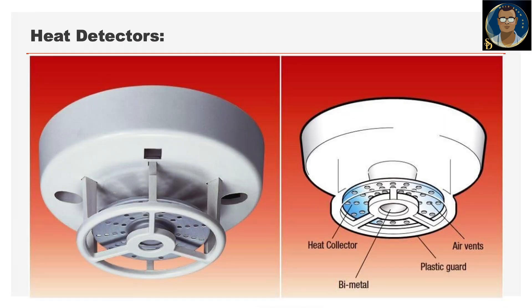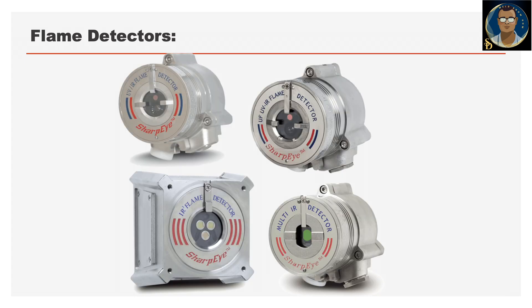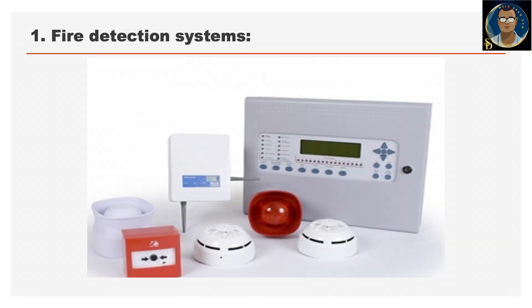Heat detectors are activated when a specific temperature threshold is exceeded, indicating the presence of fire. Fixed temperature heat detectors respond to a constant temperature, while rate-of-rise heat detectors trigger alarms based on the rate at which the temperature increases. Flame detectors use sensors to detect the presence of flames, providing additional confirmation of a fire event. Fire alarm control panels receive signals from detectors and activate audible and visual alarms to alert occupants to evacuate the building or facility.